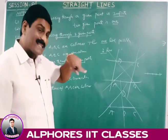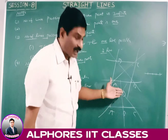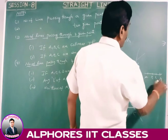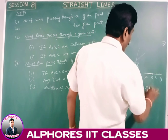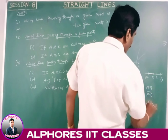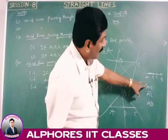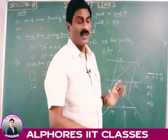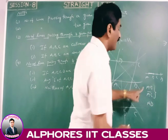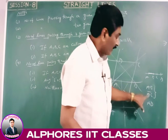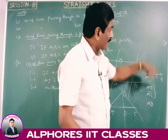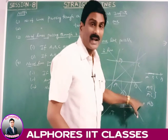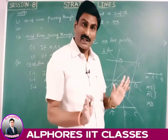To identify collinearity among 4 points A, B, C, D: find slopes of AB, AC, and AD. If slope AB = slope AC = slope AD, then A, B, C, D are collinear. If slope AB = slope AC ≠ slope AD, then A, B, C are collinear and D is separate. If all slopes are different, then no three of them are collinear.